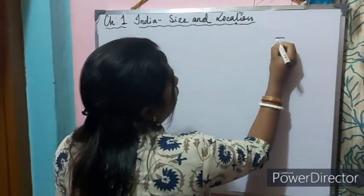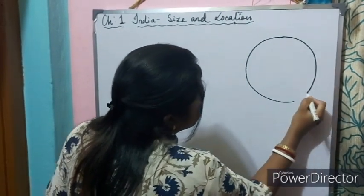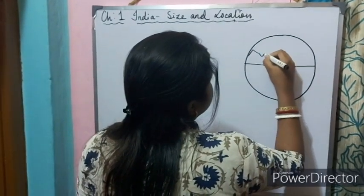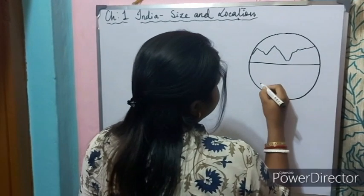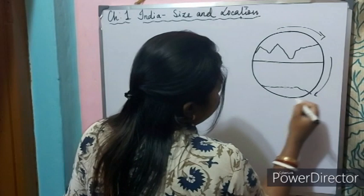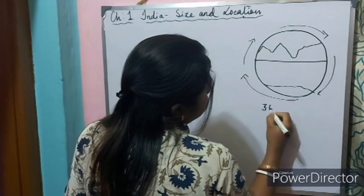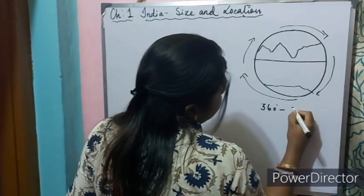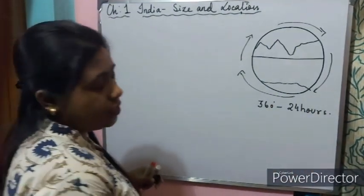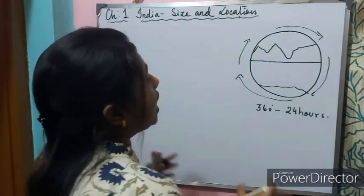Our Earth completes one rotation on its own axis, covering 360 degrees in 24 hours. On the basis of this, the world is divided into 24 time zones.